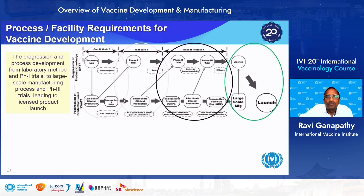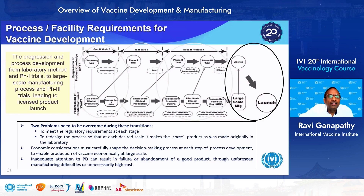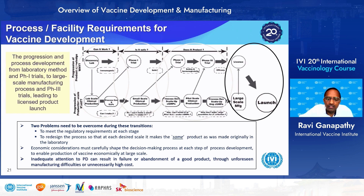Two problems need to be overcome during scale transitions: meeting regulatory requirements at each stage, and redesigning the process so that at each desired scale the same product is made as was originally made in the laboratory. Economic considerations must also carefully shape decision-making at each step of process development to enable economical production at large scale. Inadequate attention to process development can result in failure or abandonment of a good product through unforeseen manufacturing difficulties or unnecessarily high costs.